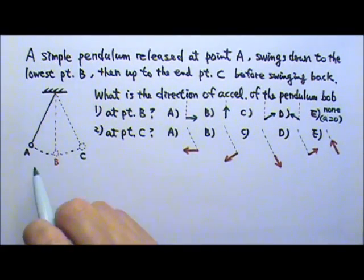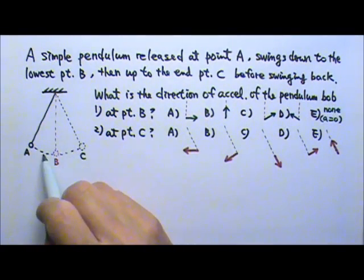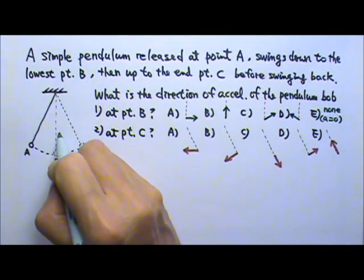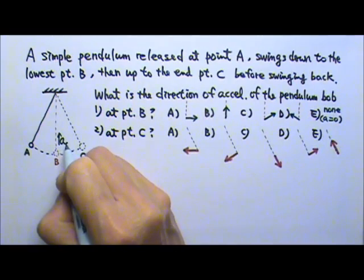At point B it is moving on a curve that means it has a direction change. It has this centripetal acceleration going towards the center.